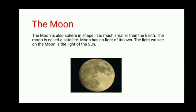The Moon is continuously revolving around the Earth, so it is called a natural satellite. Taking the idea from the Moon, humans have sent around 3,000 man-made satellites which are revolving around the Earth and continuously sending us information from space about other objects like planets and stars. The Moon completes its one revolution around the Earth in 29 or 30 days, and that's how the months change.